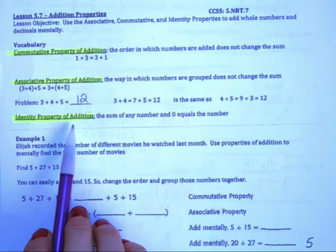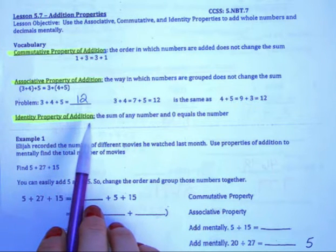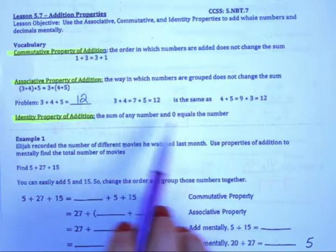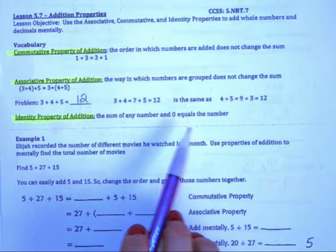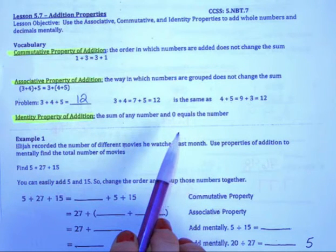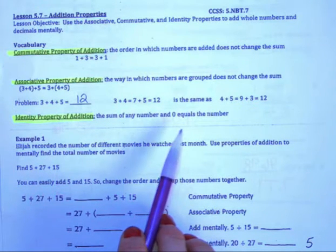The identity property of addition says that the sum of any number and 0 always equals the number. That one should make the most sense to you and be one that will really stick with you and you won't have to think about as much.